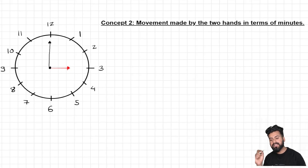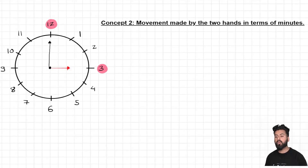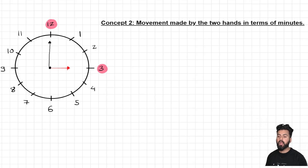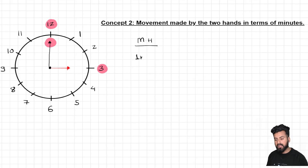To understand this, let's start with an easy example. Let's say it's 3 o'clock. At 3 o'clock, the hour hand would be at position 3, while the minute hand would be at 12. Let's first talk about the minute hand. What will be the position of the minute hand after one hour? After one hour, the minute hand will come back to its original position. The total distance covered by the minute hand in terms of minutes is 60.